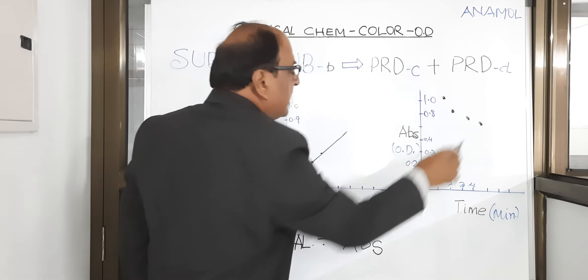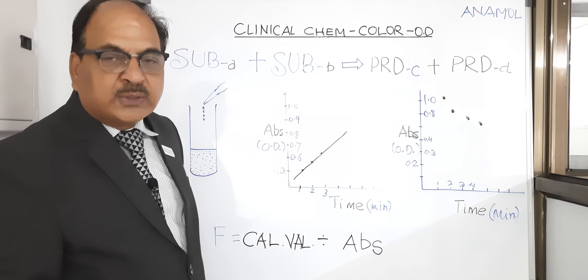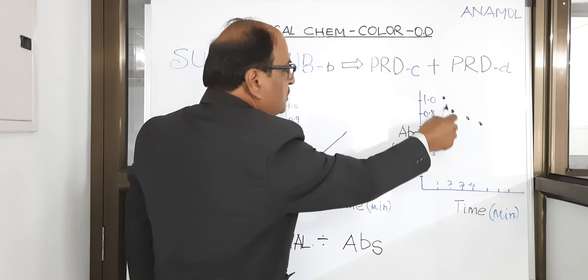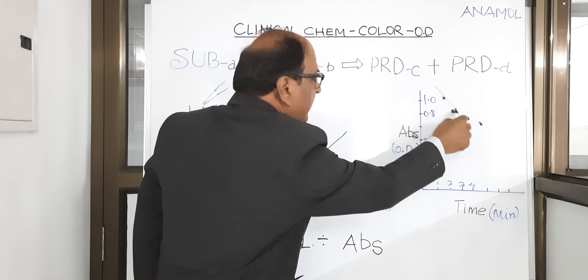Similarly, as the reaction further moves forward for minute number three or four, the absorbance will keep on falling because NADH is getting consumed in the reaction. So you will find a graph shown by the instrument as a decreasing absorbance.